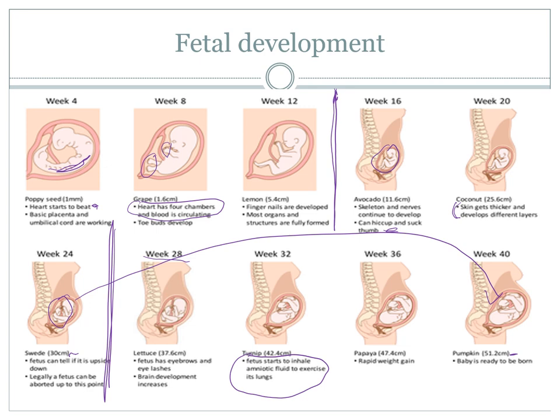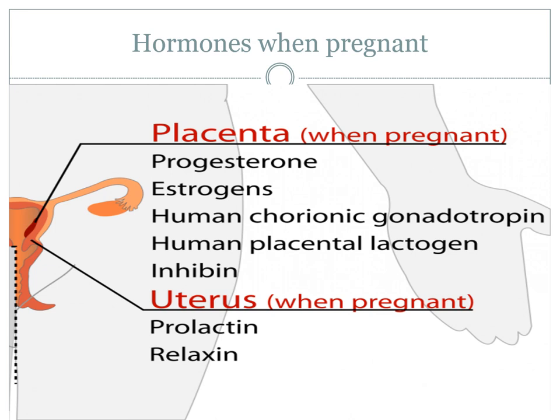Now let's talk about the hormones that make all this possible. The corpus luteum - the temporary endocrine tissue produced by ruptured follicles within the ovaries - will continue to produce progesterone for about two to three months, waiting until the placenta is completely developed. It will keep producing progesterone, and we'll get a little bit of estrogen coming from the ovaries as well, though not as much as you'd think.